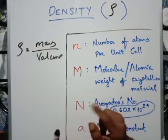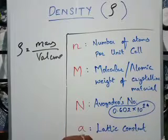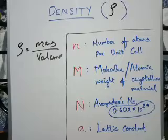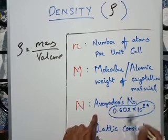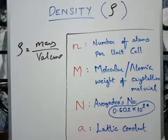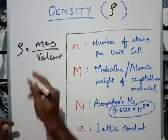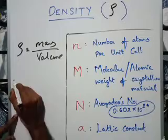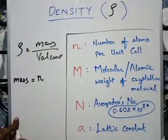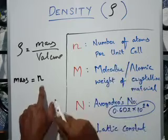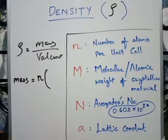If you choose the amount of material, one mole of atoms is 6.02 into 10 raised to 24 atoms. That is why we say one mole of atoms. Now, what is the lattice constant? The lattice constant is the edge length of the unit cell. Now, mass by volume — what is the total number of atoms per unit cell?